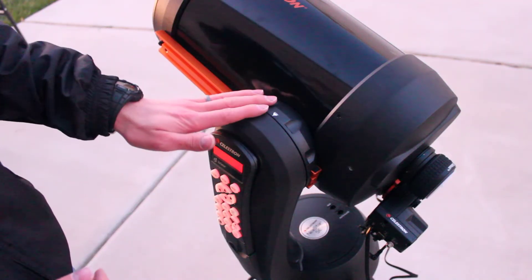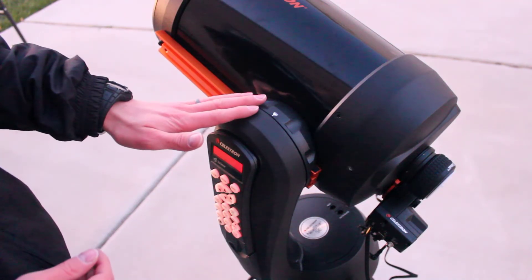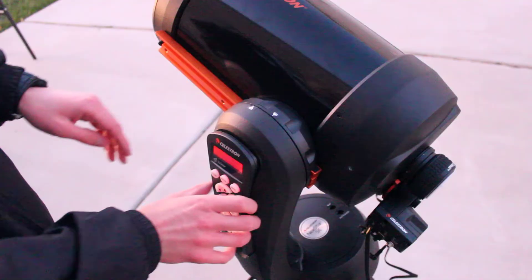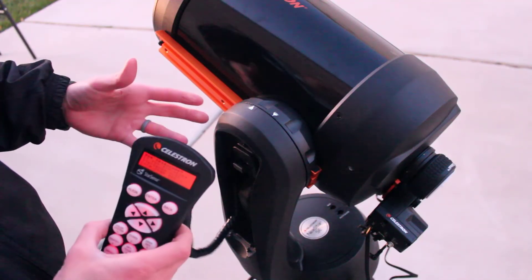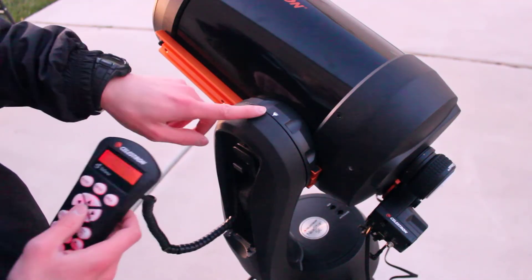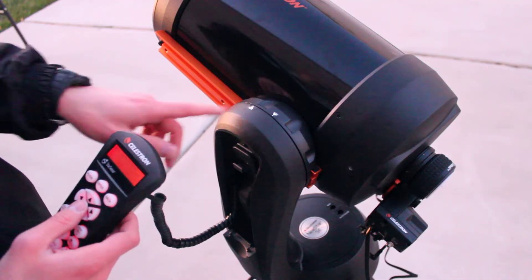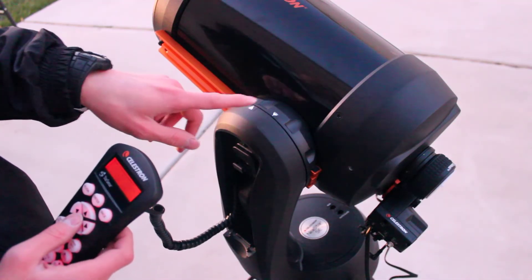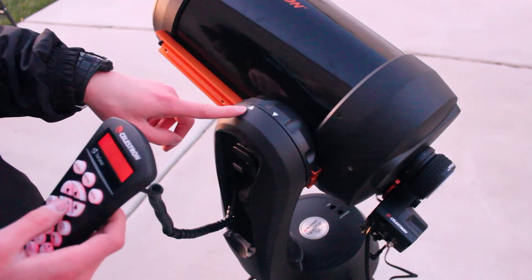Using StarSense with an Altitude Azimuth fork mount is not much different than an equatorial mount. You still need to swap out the hand controller, so make sure you do that.